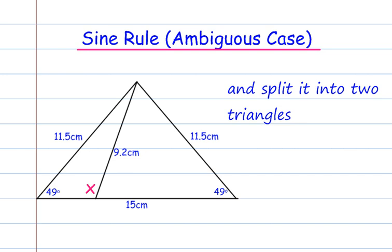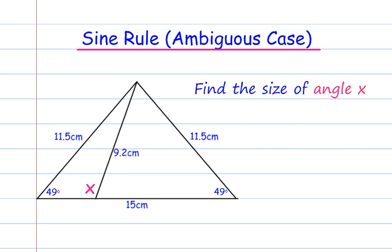We're going to split the isosceles triangle into two smaller triangles using a length of 9.2cm. Let's find the size of angle X.